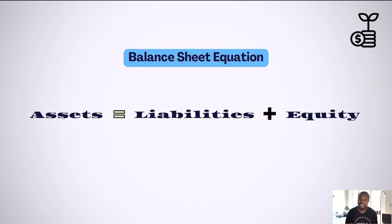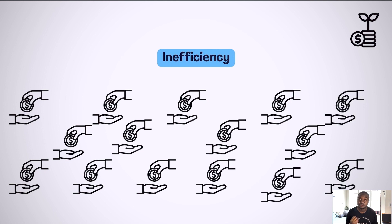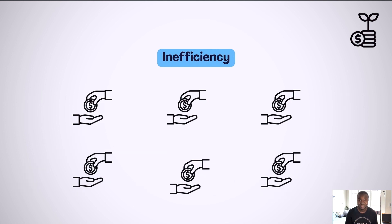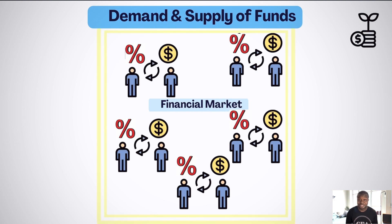However, there is inefficiency in the amount of time, effort, and costs that Ismo had to incur to reach out to 50 different people. Is there an easier way? Financial markets exist to enable borrowers and lenders to transact in an efficient manner through regulated institutions, which collect money from those who have excess and are willing to lend or invest for a return, and give it to those who want to borrow and are willing to pay a return on the borrowed funds.